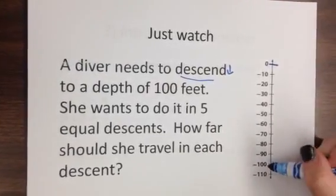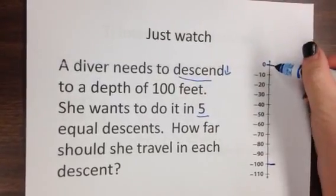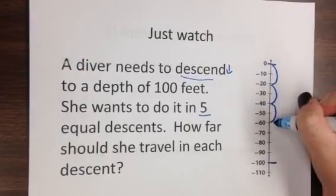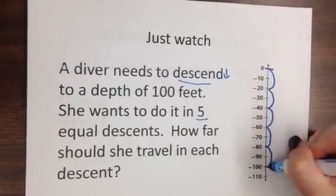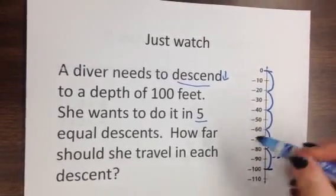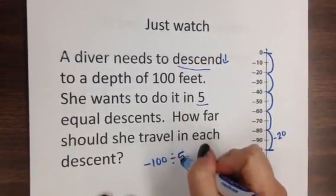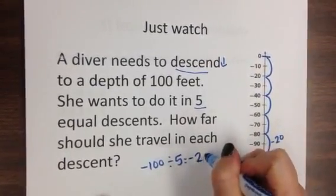So pretty much what you're going to have is negative 100 divided by five. So it would be five equal descents would be 20 feet in each descent. So it would be negative 20. You're decreasing 20 feet. So it would be negative 100 divided by five equals negative 20.